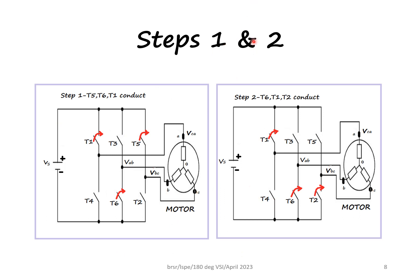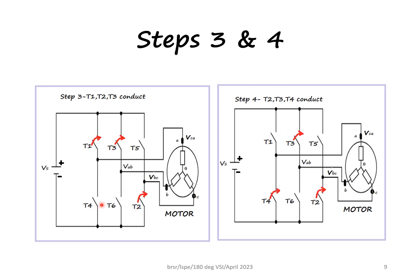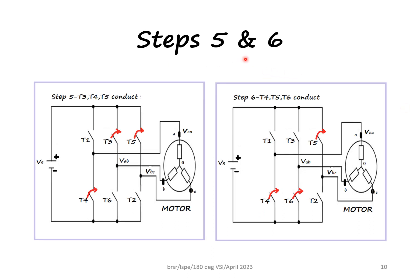Steps 1 and 2 are shown here. In the first 60 degrees (0 to 60°), switches 5, 6, and 1 are on. In the next step, 5 is commutated and 6, 1, 2 are conducting. Then 6 is commutated and 1, 2, 3 are conducting. In the following step, 2, 3, 4 are conducting. In any step, two switches from the upper arm and one from the lower arm conduct, or one from the upper and two from the lower arm conduct.